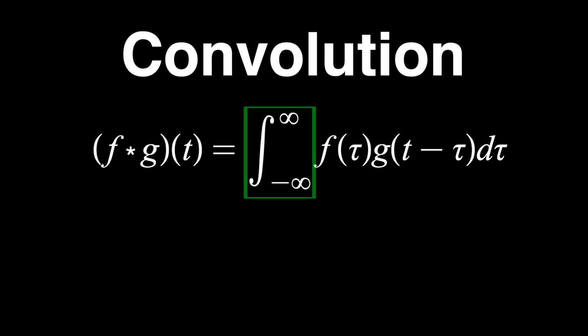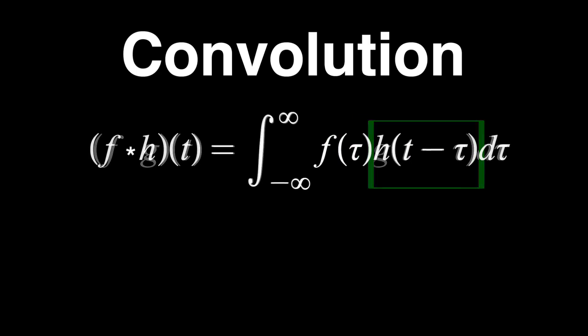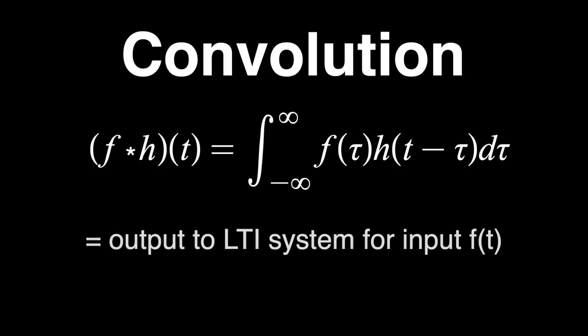This is known as convolution, and the equation for it looks like this, which is what we just did. It says take the area under the curve of one function times another that is flipped and shifted. When g of t is the impulse response, which is typically written h of t, this is the output to a system for some input f of t.